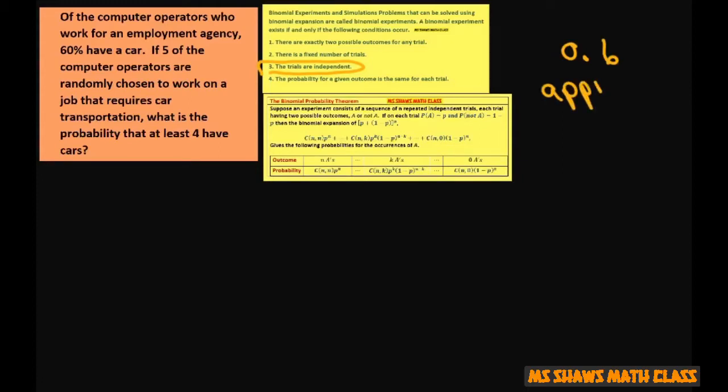So we're doing an approximation of the probability of having at least four cars. We want the probability that at least four have cars.